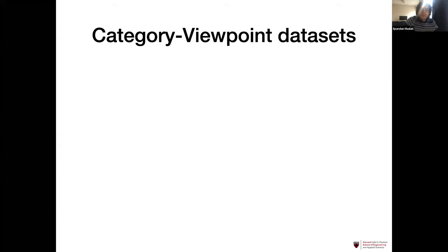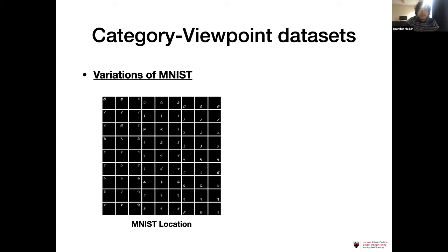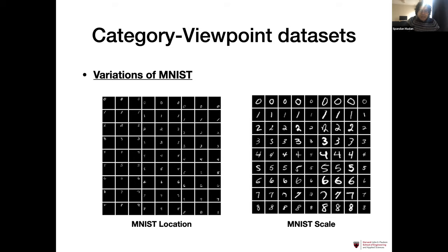We started by building category-viewpoint datasets. We built three. The easiest ones to start were variations of the MNIST dataset. We made the MNIST location dataset, where MNIST images were placed on an empty 3x3 grid — nine different positions. We also made MNIST augmented with scale, where we rescaled MNIST images and padded them back to the original size. These are toy datasets which enable us to understand the whole paradigm and give us a first poke at the problem.